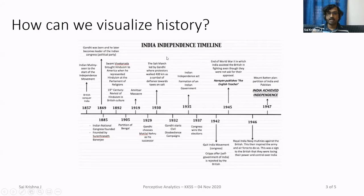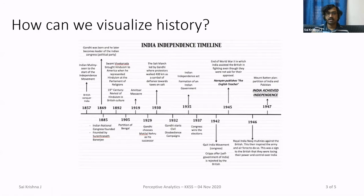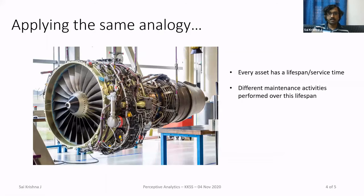For example, take the timeline of India's independence movement. It starts from 1857 — the Great Revolt of 1857 is taken as the catalyst setting us on the path towards independence. Then you have key events: in 1919 you have the Jallianwala Bagh Massacre, the civil disobedience movement, and finally in 1947 we achieved independence. So over 90 years from 1857 to 1947, those are the key events in the history of the country. Applying the same analogy to the aircraft engine history scenario.